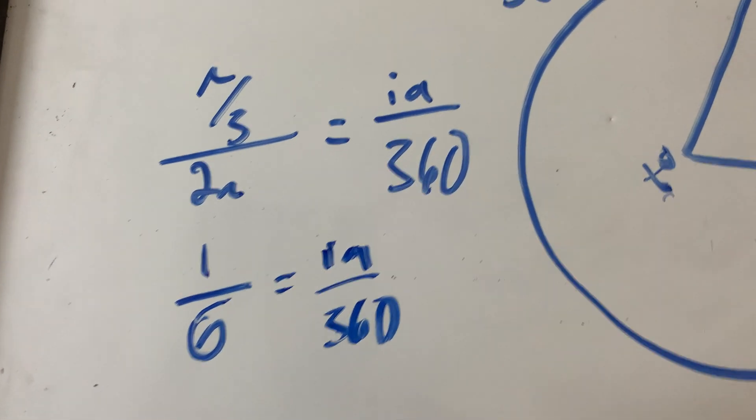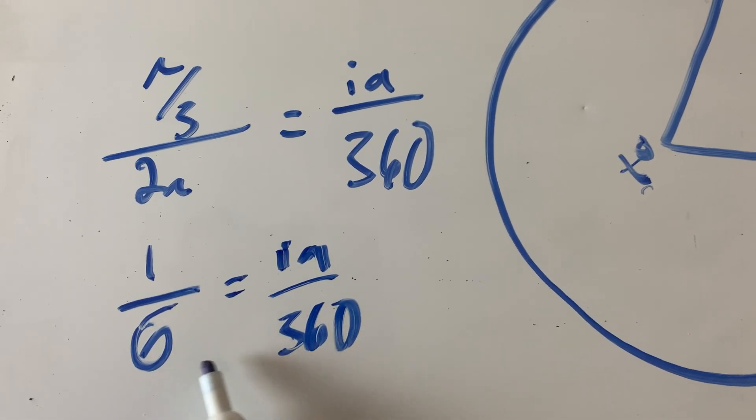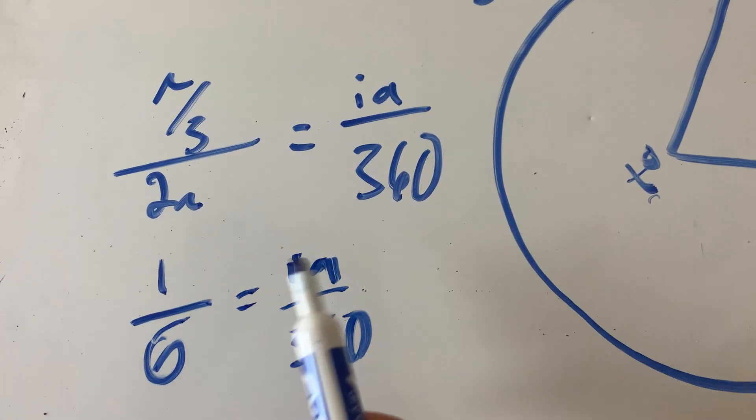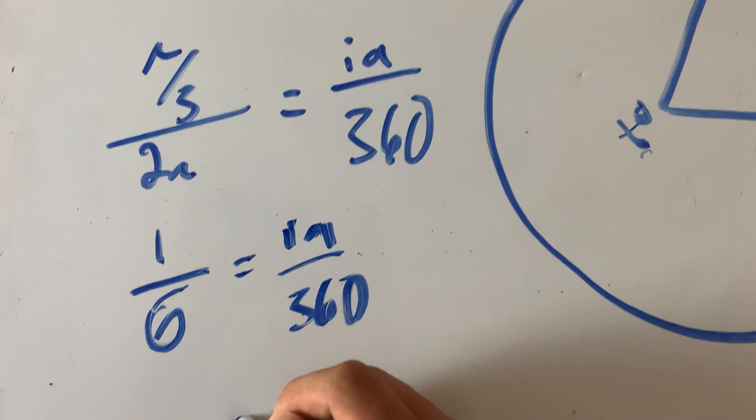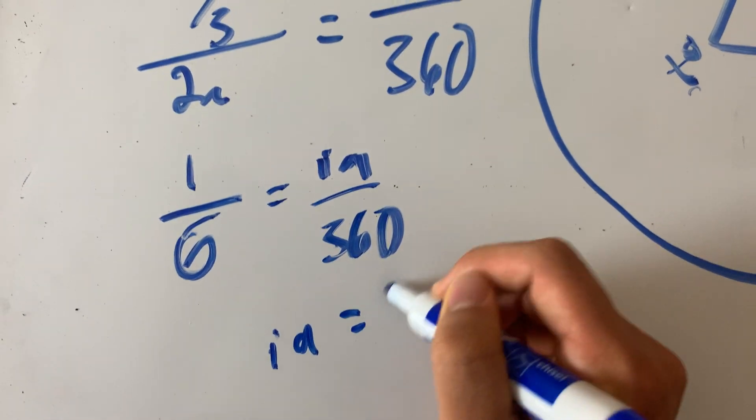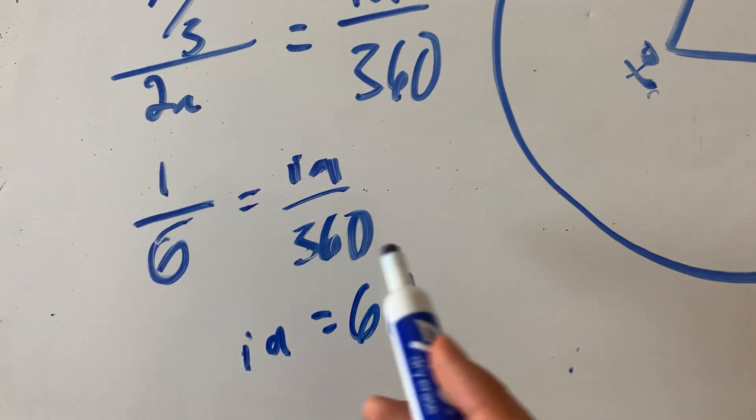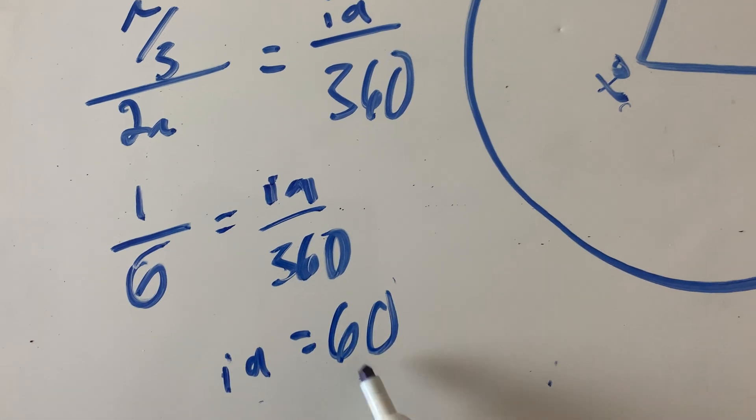Oh, shit. All right. So multiply by 60, multiply by 60. So that means IA equals 60, yeah? Because six times, you know, 60 is 360. One times 60 is 60. So IA equals 60.